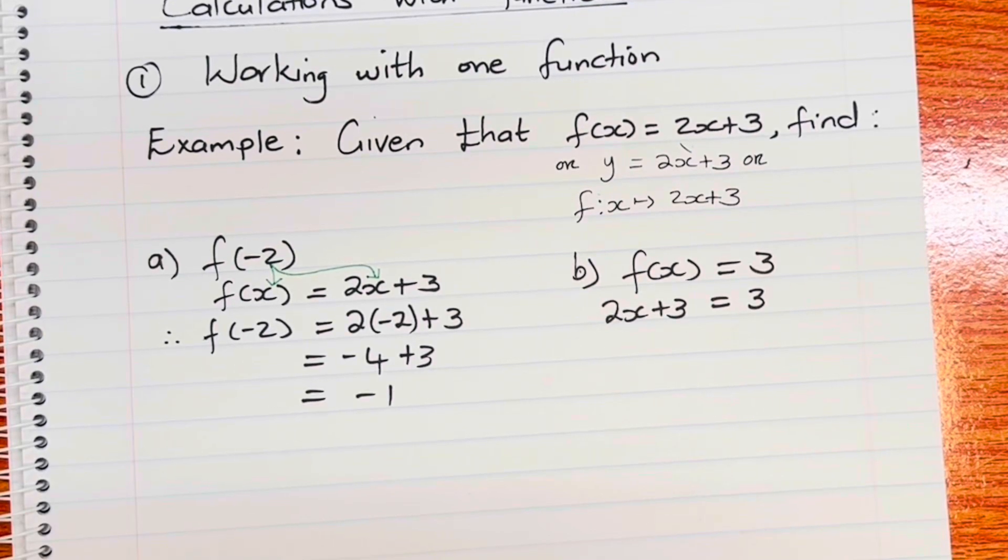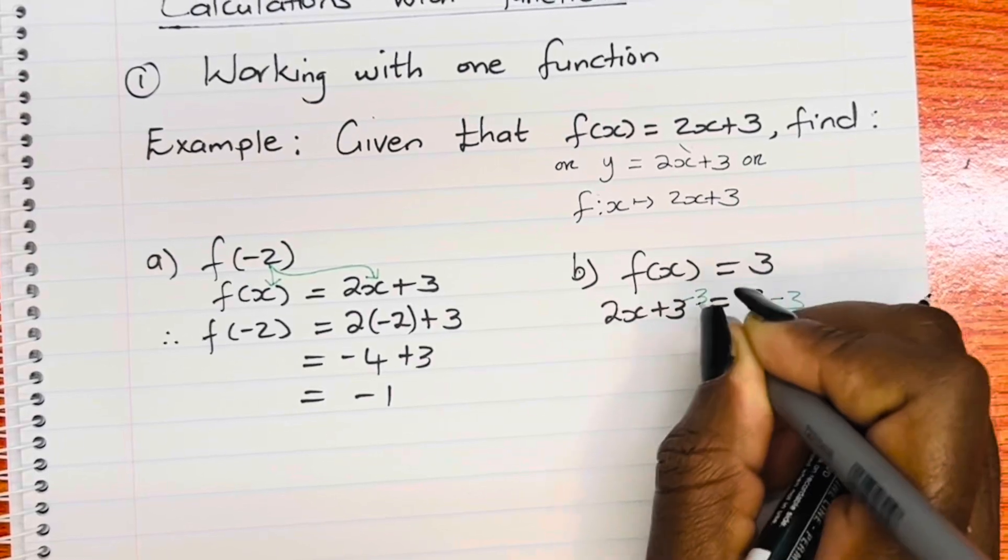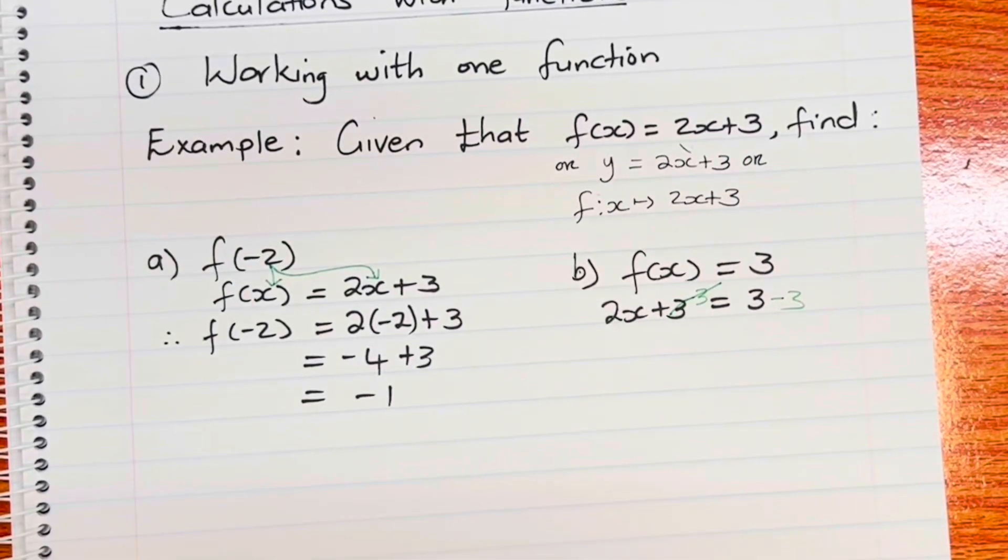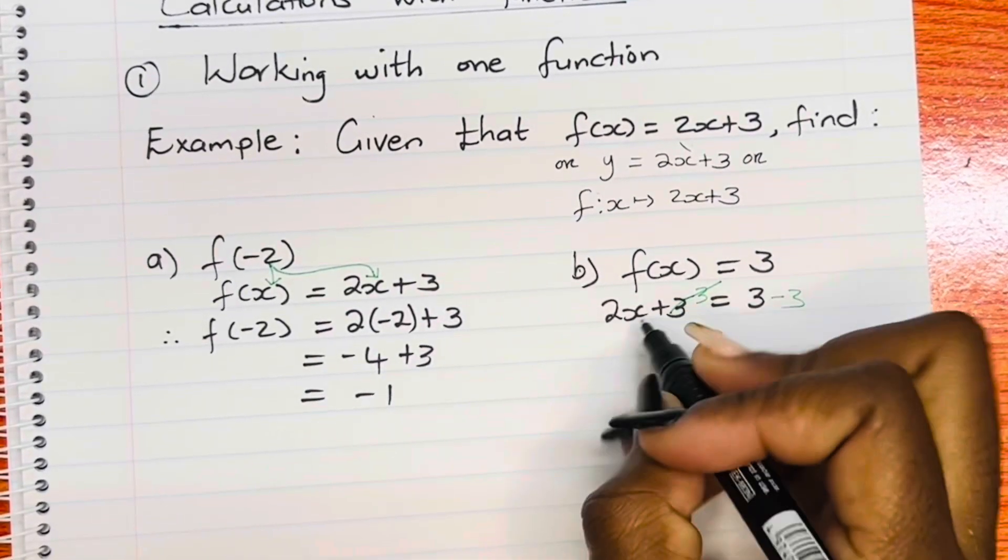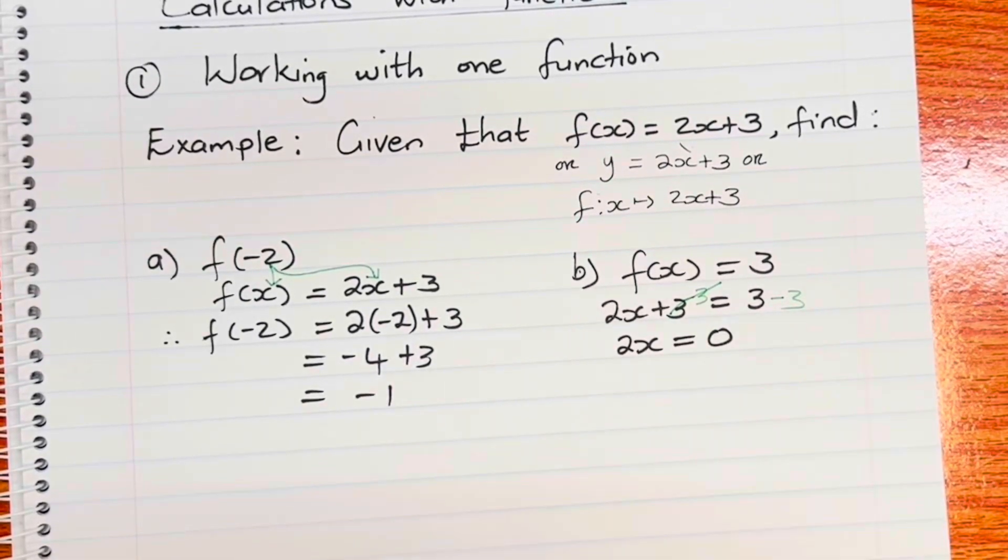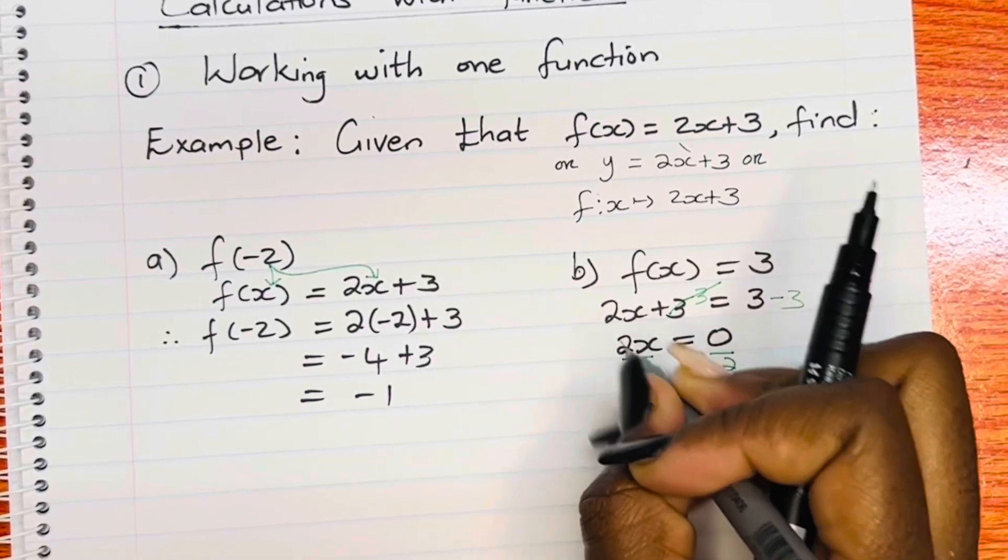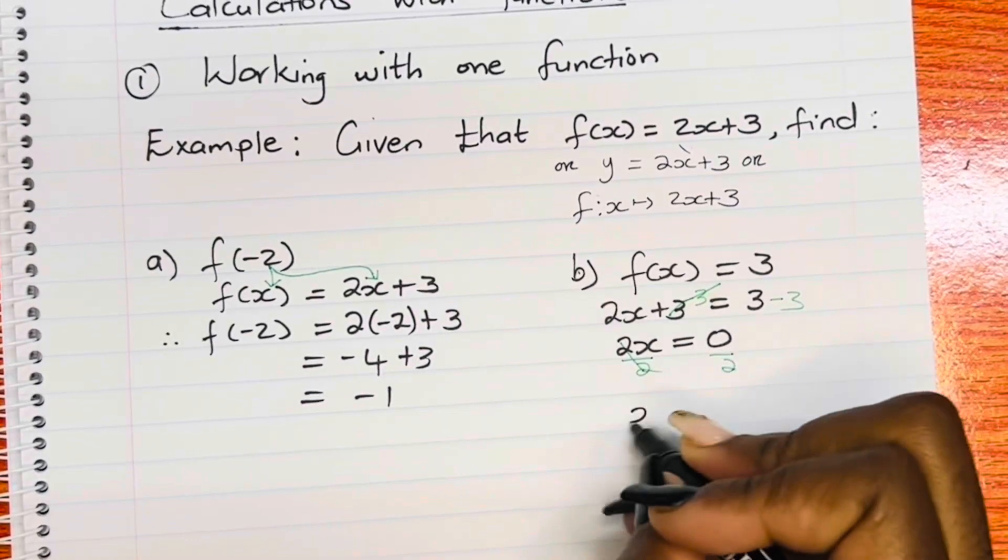And then it looks like a linear equation. Not looks like, it is a linear equation. So you simply solve for x. So you take 3 to the other side, and because it's plus 3, you subtract 3. Do the same on the other side. You're left with 2x equal to 0. And to get rid of 2, you divide both sides by 2, and you have x is equal to 0.